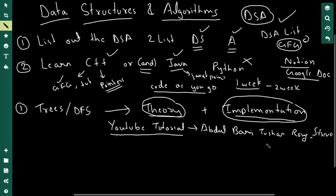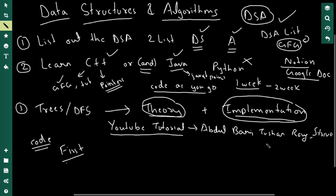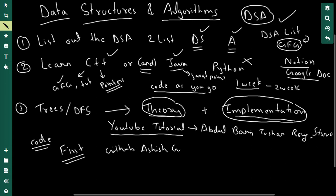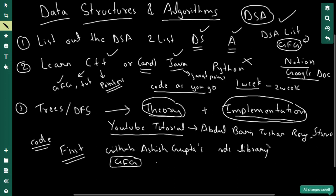After you've learned the theory, you need to implement it — that's the coding part. After learning the theory, you won't be able to code it yourself right away. So first, take a look at someone else's implementation. You can go on GitHub and look at Ashish Gupta's code library — he's one of India's top competitive programmers. Or you can go on Geeks for Geeks, which is the holy Bible of computer science students. Read and understand the code — understand what each line is doing.